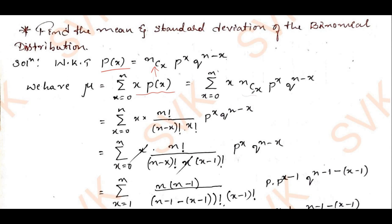Now, nCx can be written using the definition of combinatorics as n! divided by (n−x)!·x!, multiplied by p^x · q^(n−x), and also multiplied by x. Under the summation, x is running from 0 to n.